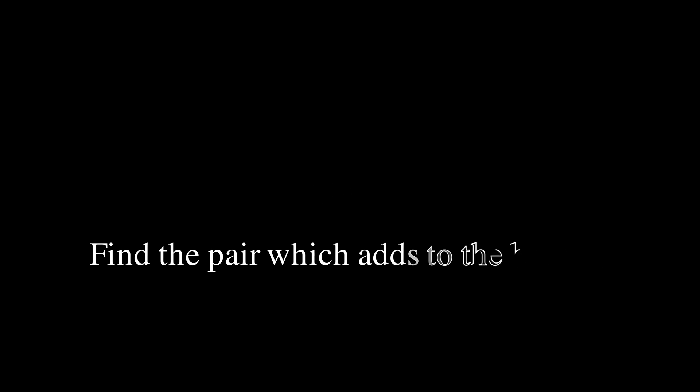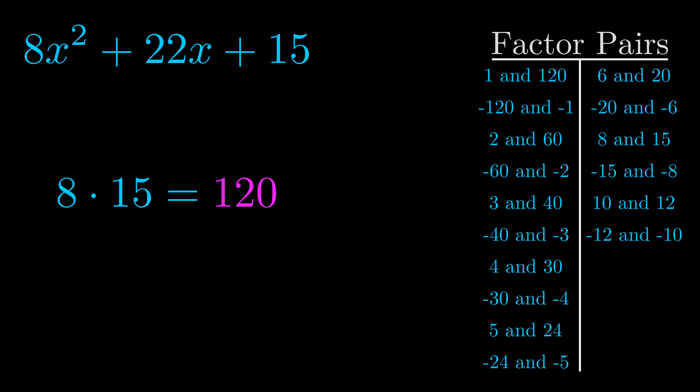The b value is the coefficient on the x term. That's the middle term, the one that we haven't done anything with yet. And really this is the only factor pair that we need.